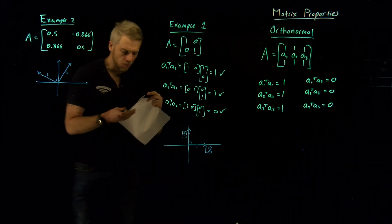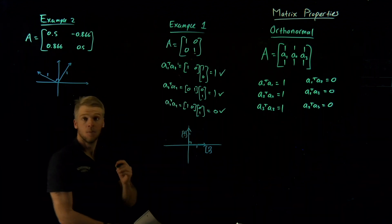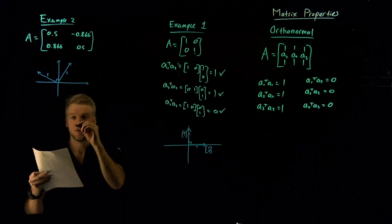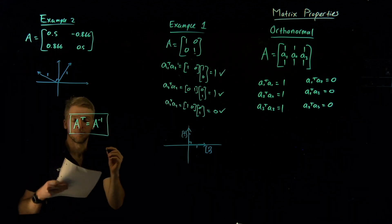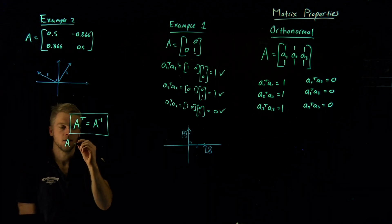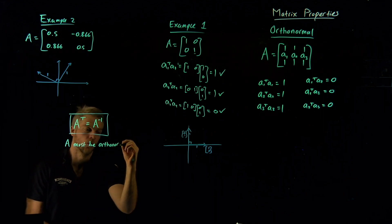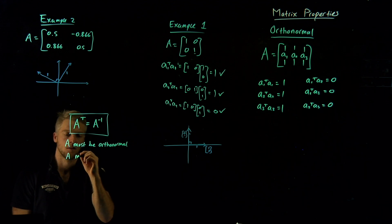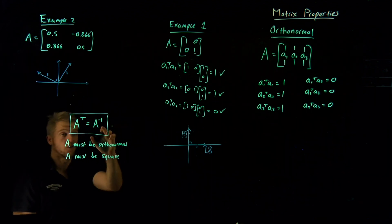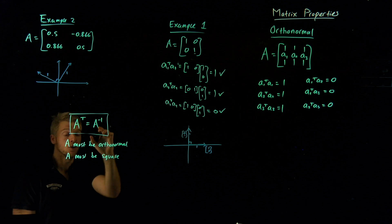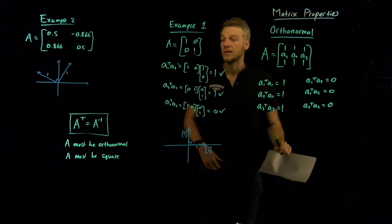Now why do I bring all of this up? It turns out there's one really powerful property of orthonormal matrices: A transpose equals A inverse. For this to be true, A must be orthonormal and A must be square. You might ask whether A needs to be invertible — it turns out orthonormal matrices are always invertible because their determinants can never be zero.